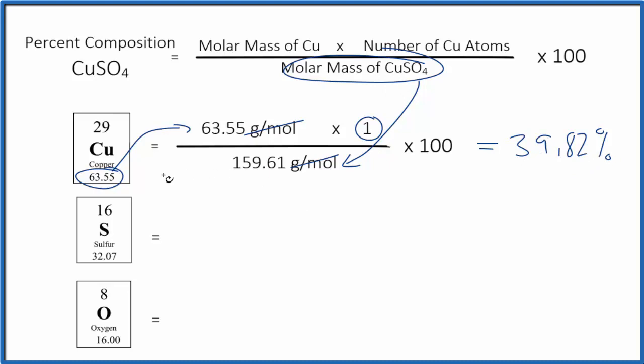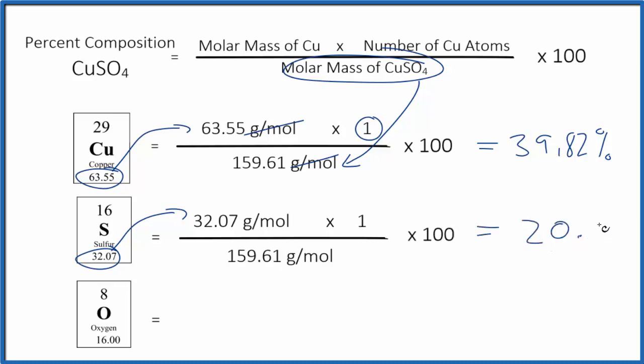We do the same process for sulfur. We've got the molar mass or atomic mass here. We only have one sulfur atom, and then we divide all of that by the molar mass for CuSO4, multiply by 100, and we get 20.01, and that's our percent.